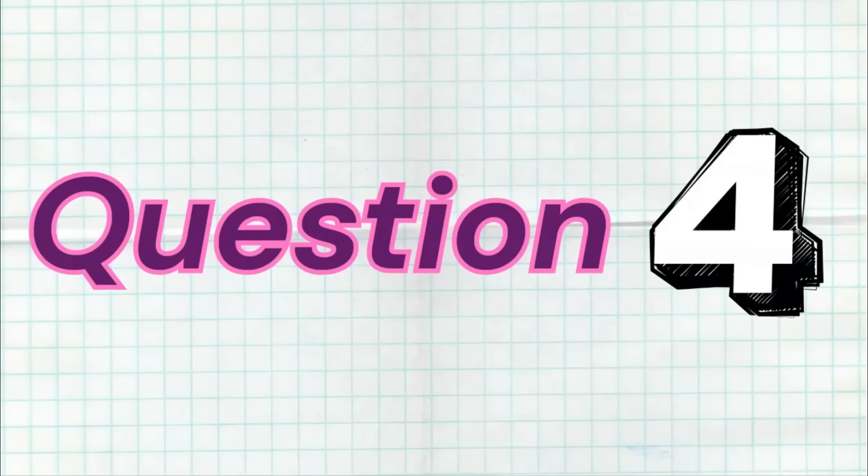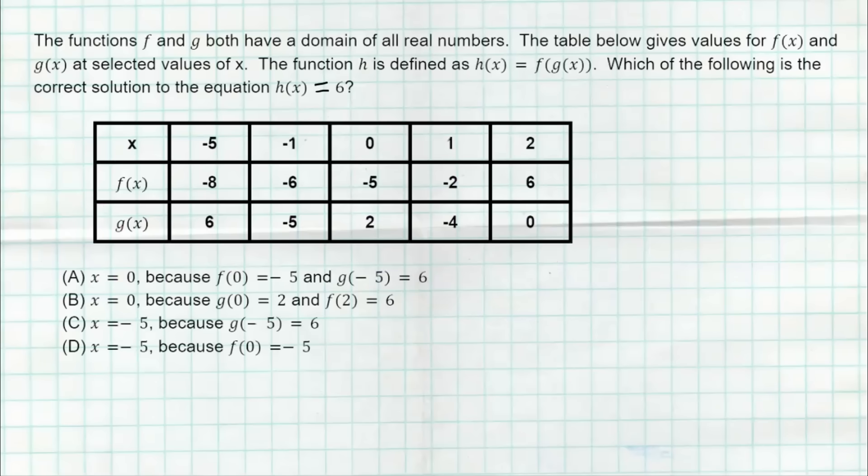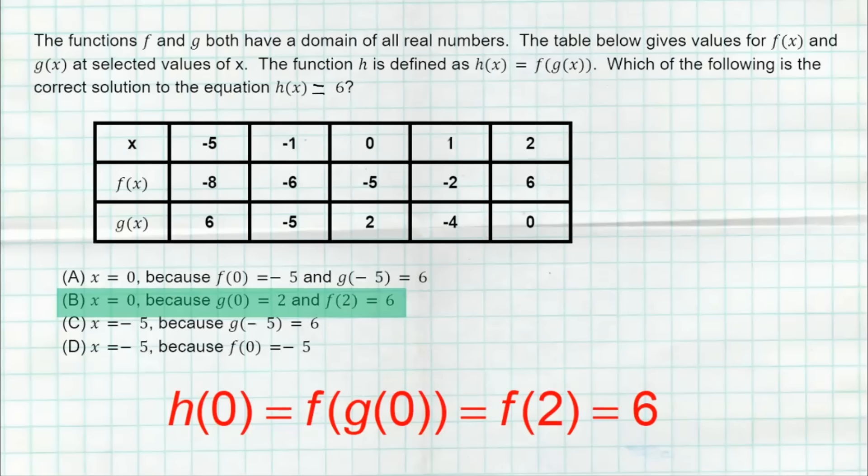Here is question number four. And the correct answer is B. So basically this is very similar to the previous question. A couple of the numbers are a little bit different. But this time we're not asked to plug a value into the composition function. We're asked to solve it. We're trying to figure out when does H of X equal six. So we've got to think backwards a little bit here. And here's why B is the correct answer. If we start with zero, if we plug zero in, we have to plug it into G first. So the output is two. So G of zero equals two. So that output of two now becomes the input for F. And if we plug two into F, we get six. So there's that six we want right there. And that's why B is the correct answer.